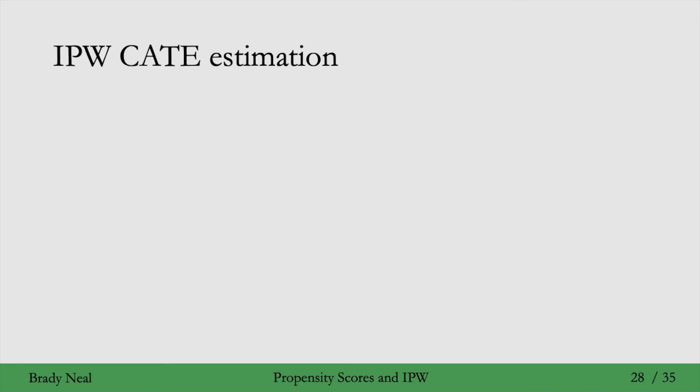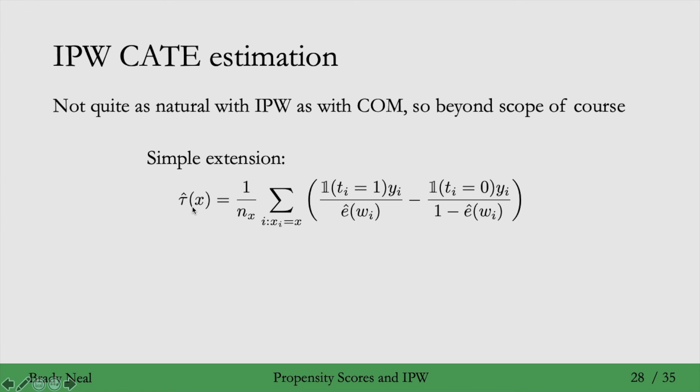We just saw IPW estimation of the average treatment effect, the ATE, but what about IPW estimation of the conditional average treatment effect? CATE estimation is not quite as natural with IPW as with COM, so it's beyond the scope of the course. A very simple extension would be to just restrict, so for the CATE for this X, would be to just restrict this sum to data points where we have that specific X and then divide by the number of data points that have that specific X. But this might not work super well, especially if not very many data points have that specific value of X. To read more about IPW CATE estimation, you can check out this paper and some of the references in it.